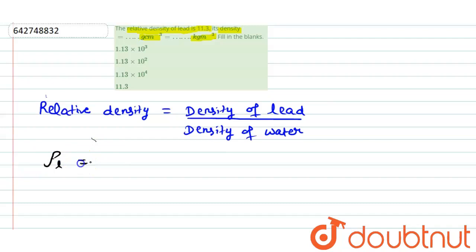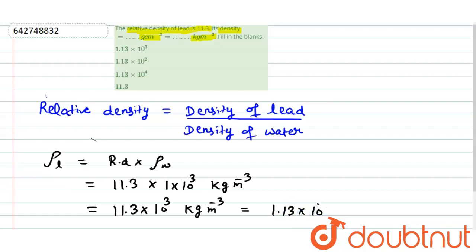So, density of lead is equal to relative density multiplied by density of water. Relative density of lead is 11.3 which is given in the question into density of water that is 1 × 10 to the power 3 in kg per meter cube. So, after solving or multiplying these two terms, we will get 11.3 × 10 to the power 3 kg per meter cube, or we can write it as 1.13 × 10 to the power 4 kg per meter cube. So, this is the answer for this filled up blanks and now we have to find out.